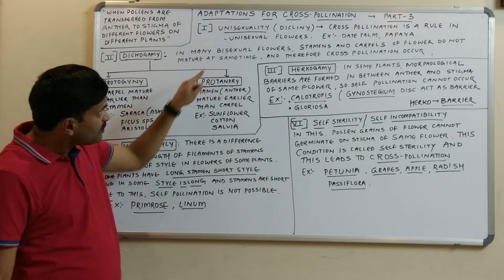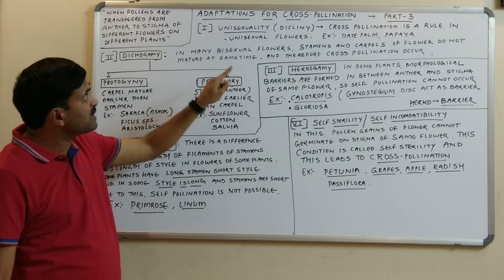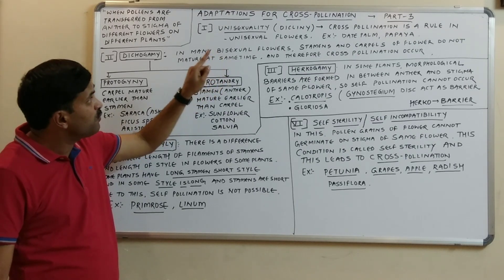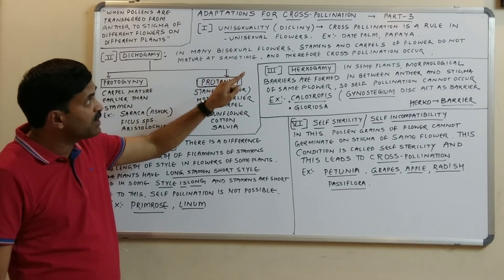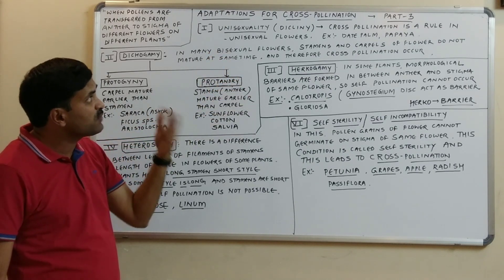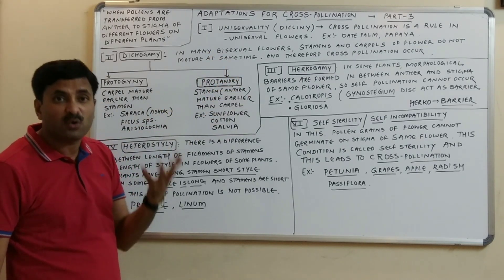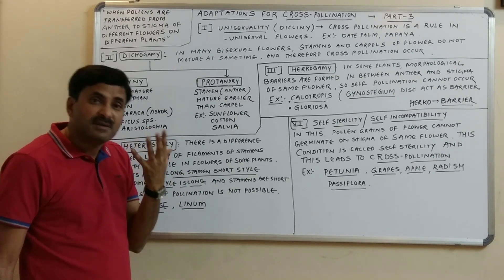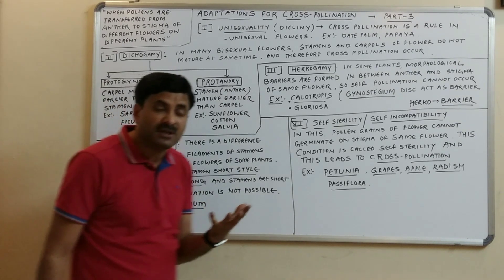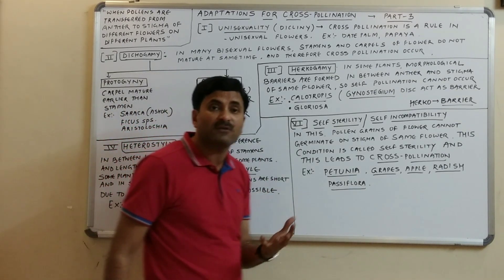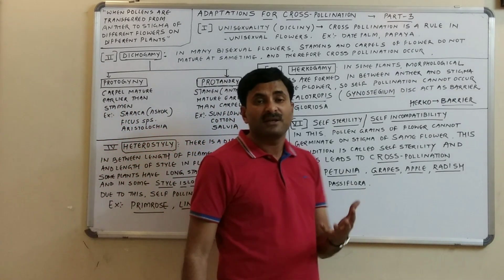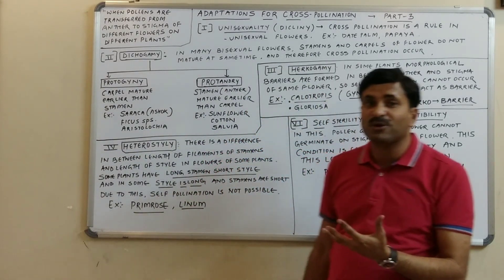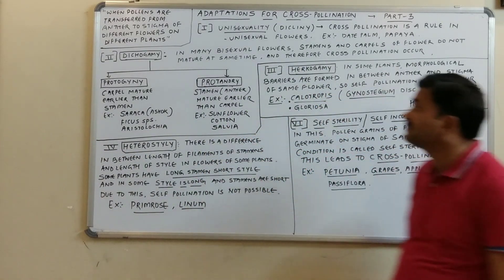This video covered the adaptations for cross-pollination — the mechanisms that favor cross-pollination and prevent self-pollination. Thanks for watching.